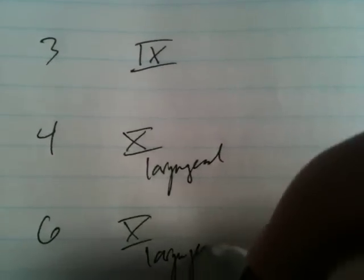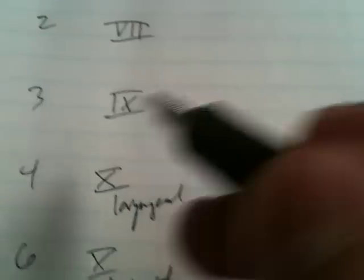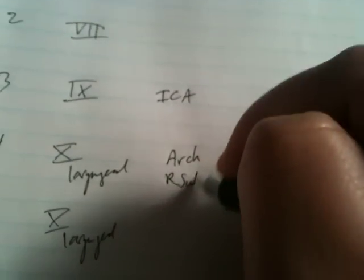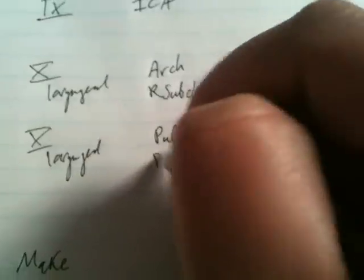It might be easier if we fill in the rest of the blanks so we can see everything and then it'll be easier to remember. This one's cranial nerve nine. Also the laryngeal, and same for number six. Now let's go with some arteries. Number three gets a little ICA action. Number four gets the aortic arch and the right subclavian. Six gets some pulmonary, as well as the old ductus arteriosus.